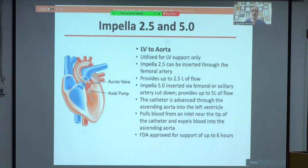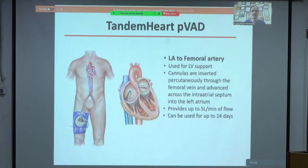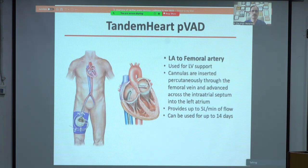The Impella 2.5 and Impella 5 are commonly used short-term cardiac assist devices primarily in the cath lab for left ventricular support. The Impella 2.5 can be inserted through the femoral artery percutaneously, while the Impella 5 needs surgical cut-down via the femoral or axillary artery, providing 2.5 and 5 liters of flow respectively. It has been approved for up to 6 hours of use by the FDA. The TandemHeart is another temporary support device for the left ventricle — cannulas are inserted percutaneously into the femoral artery and femoral vein — providing 5 liters of flow and usable for up to 14 days.